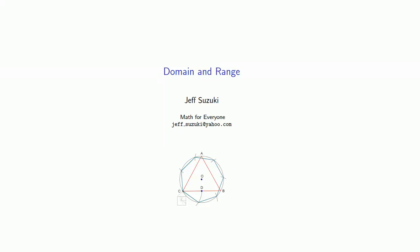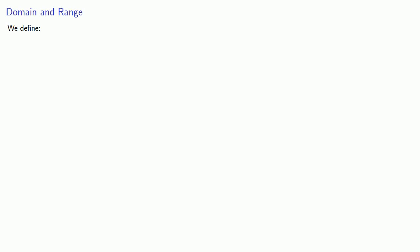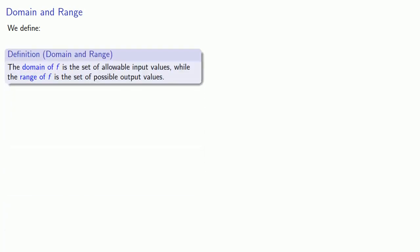Two important properties of any function are its domain and range. We define the following: The domain of a function f is the set of allowable input values, while the range of f is the set of possible output values.